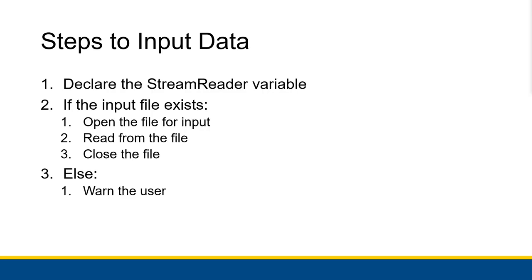The steps to input data are a little bit trickier than the steps to output data. The first thing you want to do is declare the stream reader variable. That is pretty similar to output, but note that we're using a StreamReader and not a StreamWriter. A StreamReader is able to take a file and read data from it, while a StreamWriter creates or opens a file and writes data to it. It's completely different functionality, which is why we use completely different classes.